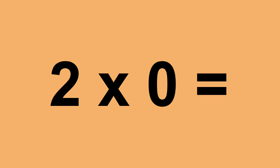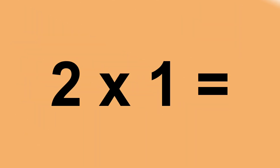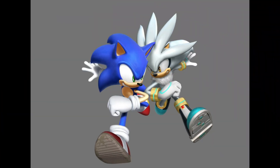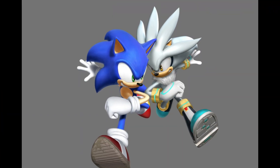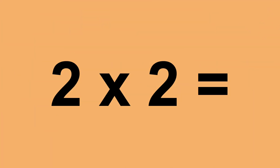Two times zero equals zero. Two times one equals two. Two times two equals four.